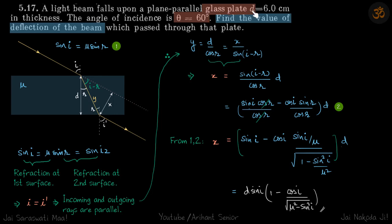We have a glass plate of thickness d through which a light beam is passing. The angle of incidence is 60 degrees. Find the value of deflection of the beam which passed through the plate. When it passes through the plate the beam exits offset, and we need to find this deflection x.